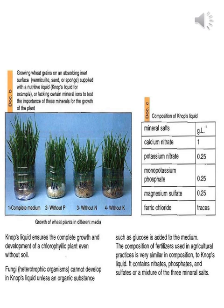According to Document B, a second experiment grew green wheat on an absorbing inert medium supplied with a nutritive liquid — a Nobs liquid — either complete or lacking certain mineral ions, to test the importance of these minerals for plant growth. In four pots: the first had a complete medium with all necessary minerals, the second lacked phosphorus, the third lacked nitrogen, and the fourth lacked potassium.